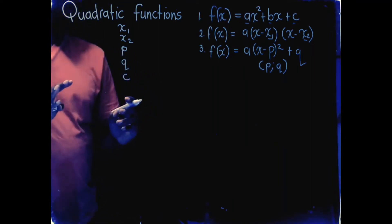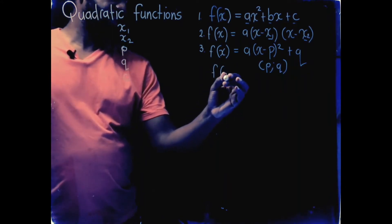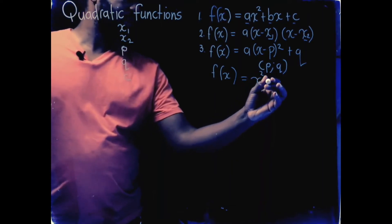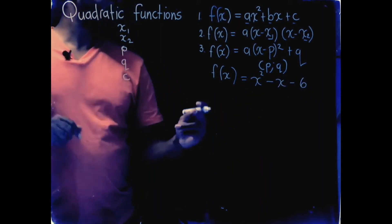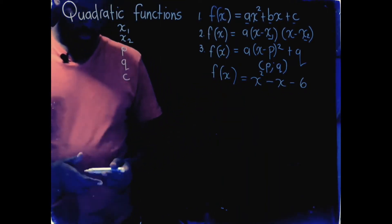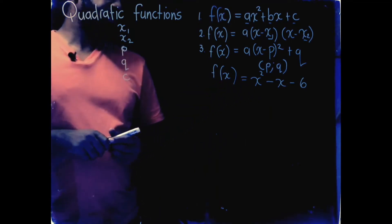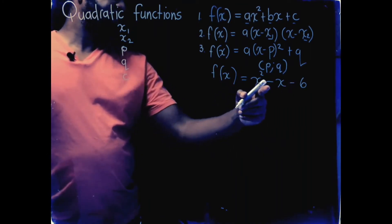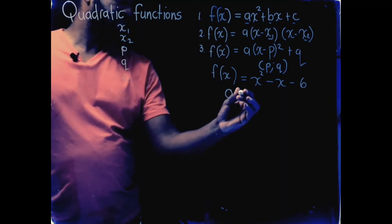So let's suppose now we want to plot a function that says f of x is equal to x squared minus x minus 6. So we want to plot this function. What are we going to do? Let's first get the two intercepts. I can clearly see that this quadratic function, the a value is 1, so it should be fairly easy to factorize.